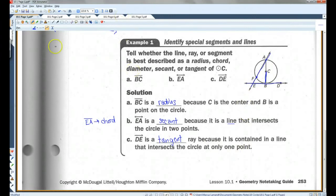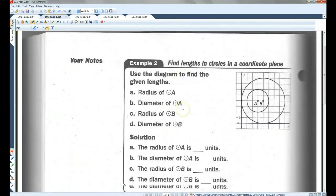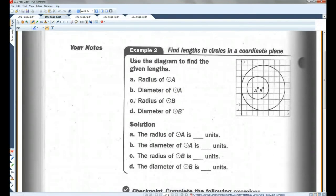Let's go on to page two. Use the diagram to find the given lengths. Radius of circle A. The radius of circle A would be from the center to the side. So like, this would be an example of a radius. It looks like it has two units.